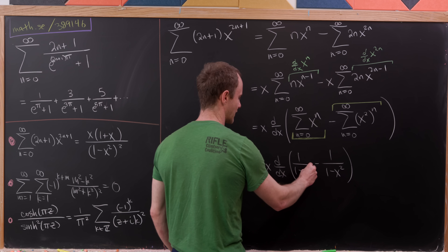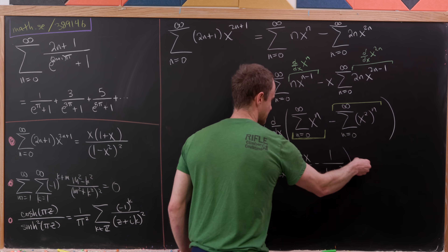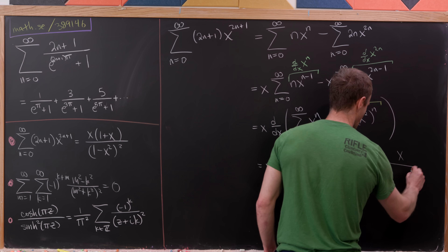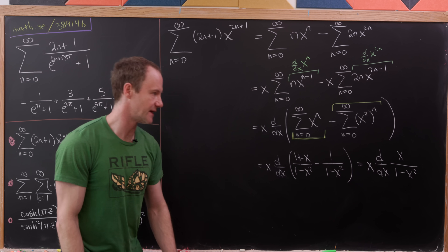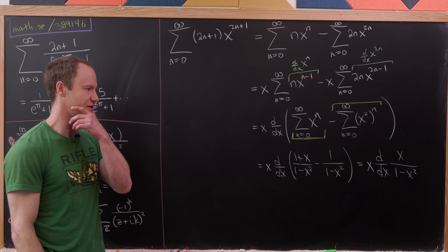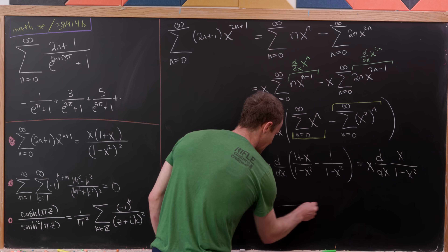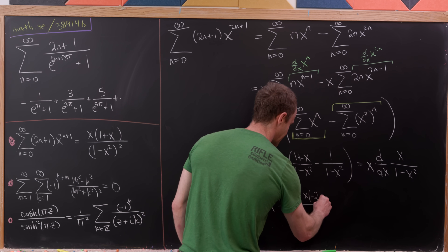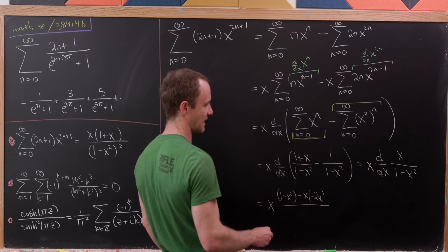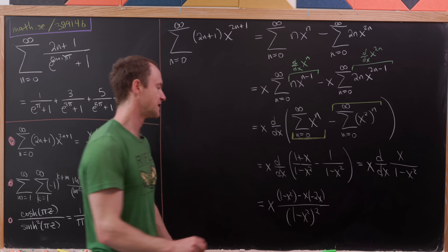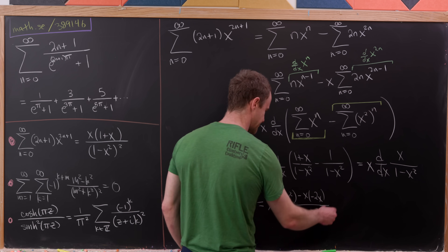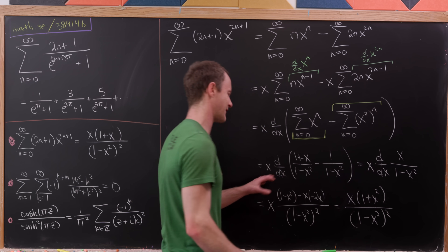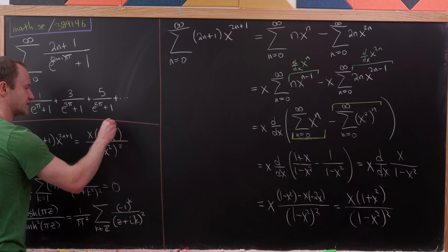I can give this a common denominator by multiplying numerator and denominator by (1+x), giving x times d/dx of x/(1−x²). Applying the quotient rule: numerator gives (1−x²) minus x·(−2x), over (1−x²)². Putting it together, this simplifies to x·(1+x²) / (1−x²)². So we've taken care of this first formula.